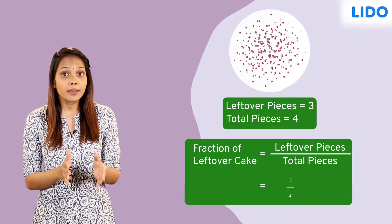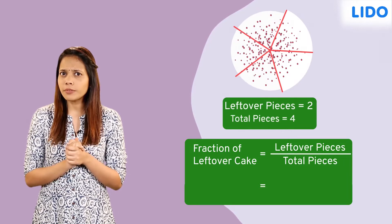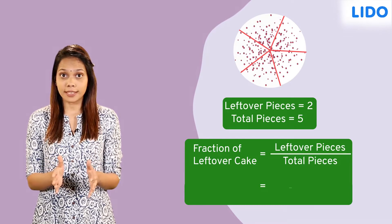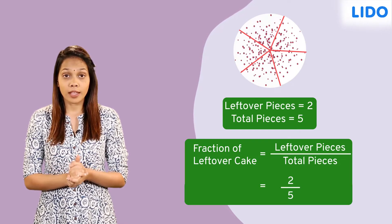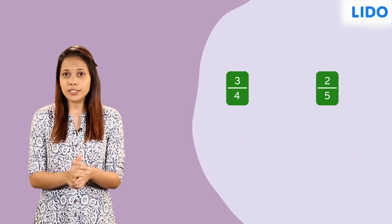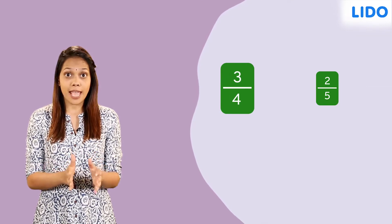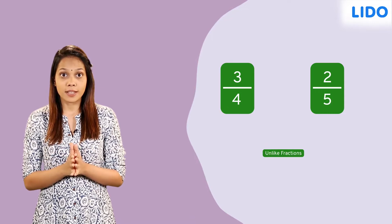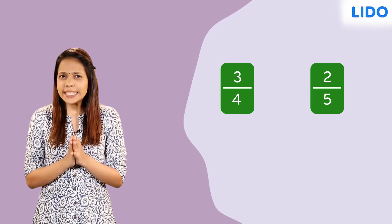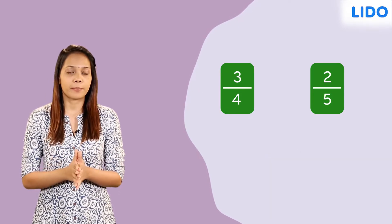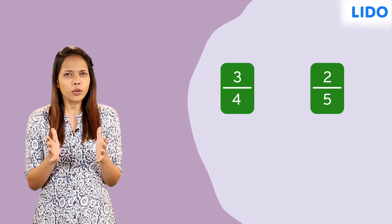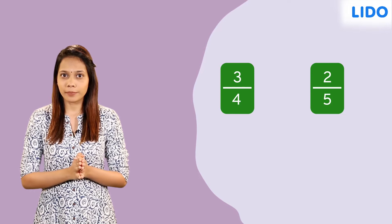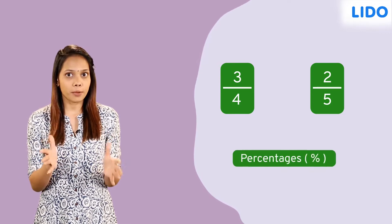And the vanilla cake has 2 out of 5 pieces remaining. In fraction form, this can be written as 2 over 5. Our task is to compare 3 quarters and 2 fifths. Since these are not like fractions, we'll have to perform some detailed calculation to compare them. What if we could reduce the amount of calculation and still be able to compare them? Let's express them as percentages.